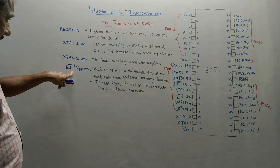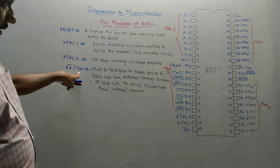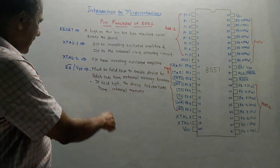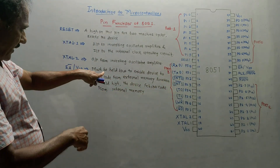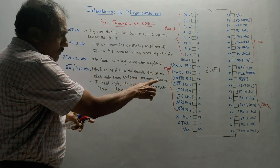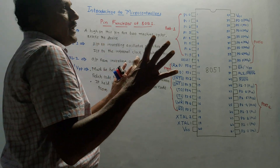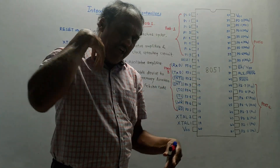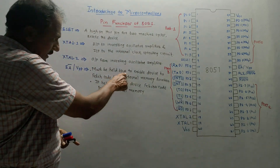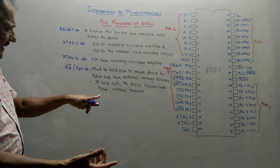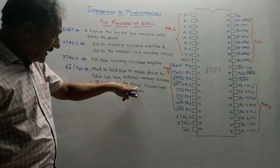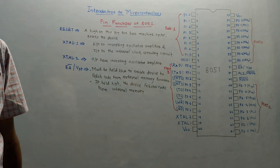EA bar or VPP is pin number 31. It must be held low to enable the device to fetch code from an external memory location. That means if you want to fetch code from external memory, this pin should be connected to ground. On the other hand, if you connect it to VCC — that is, provide logic high — then the device fetches code from internal memory.